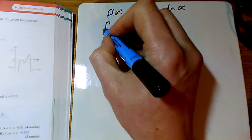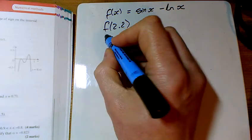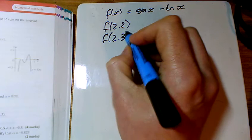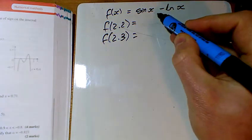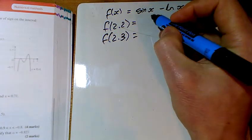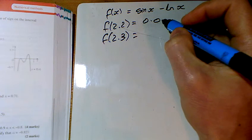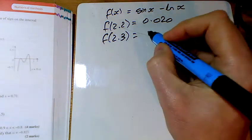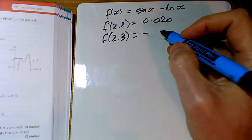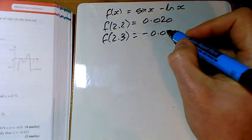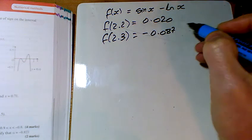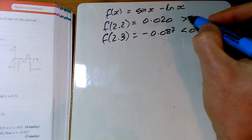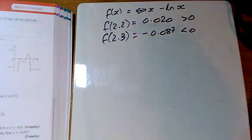And we've got to show that there's a root in the interval from 2.2 to 2.3. So stick a 2.2 in all of that, and I've got 0.020. Stick 2.3 in all of that, and I've got 0.087, but that one's negative. One's negative, one's positive. Therefore, there's a root between them.